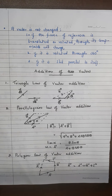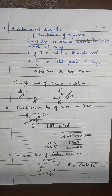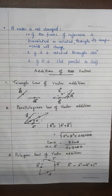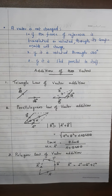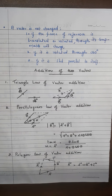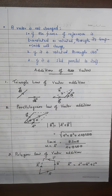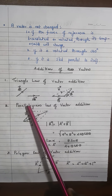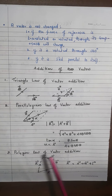In vector algebra, we have three important processes: addition, subtraction, and multiplication. For addition, we must learn three important laws: the triangle law of vector addition, the parallelogram law of vector addition, and the polygon law of vector addition.